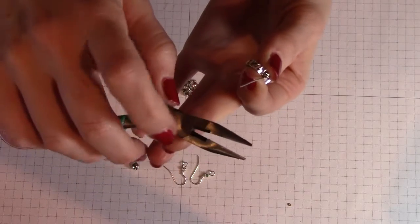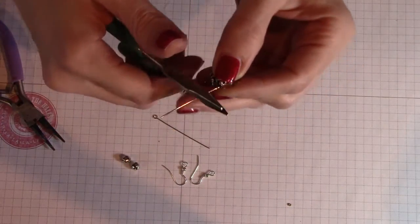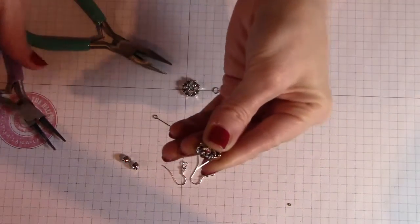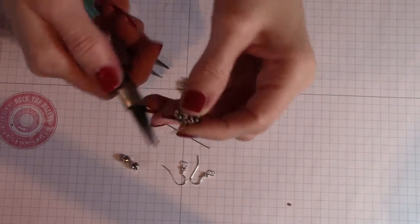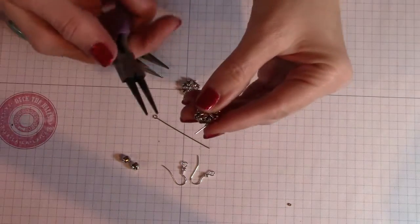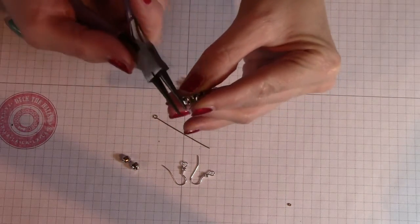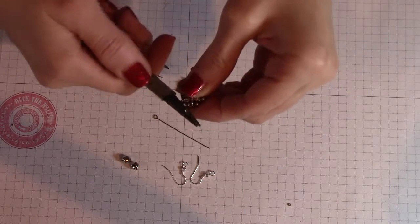So on the jewelry making needle nose pliers most of them have this little section back here which can be used to cut. So just be careful when you're cutting because the end can kind of go crazy. It's been a while since I've done this sort of thing.